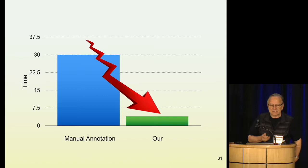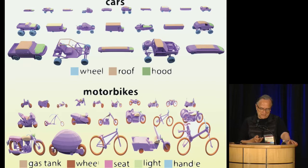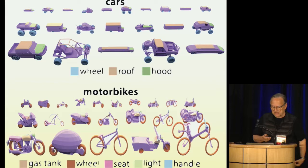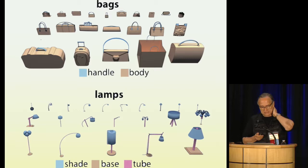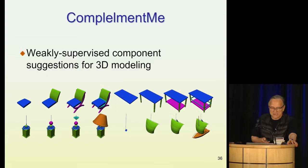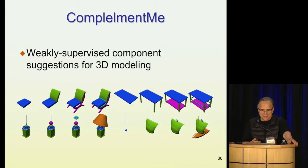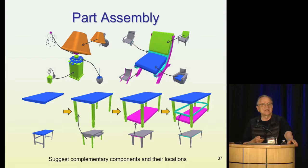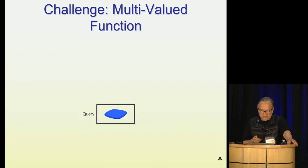Now we have some shapes and some parts. We also looked at how to build shapes part by part by adding components one after the other to create a model — this is the synthesis part. We have a system that tries to recommend components to add to complete a partial assembly. Part of the challenge is that completion is a multivalued function — given a chair seat, one can add chair backs, chair legs, and many other parts. So somehow we have to allow this multiplicity of choice in the representation.